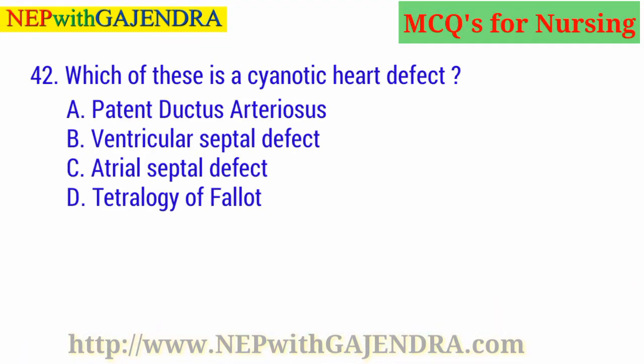Which of these is a cyanotic heart defect? A. Patent ductus arteriosus. B. Ventricular septal defect. C. Atrial septal defect. D. Tetralogy of Fallot. The right answer is D: Tetralogy of Fallot.